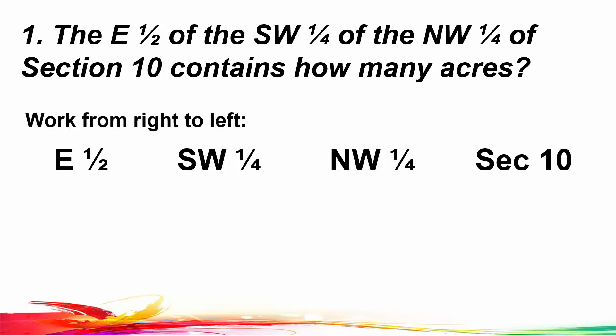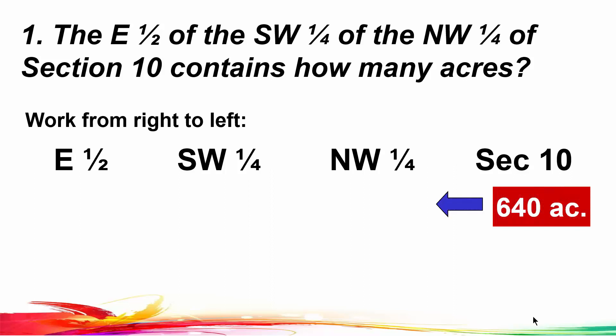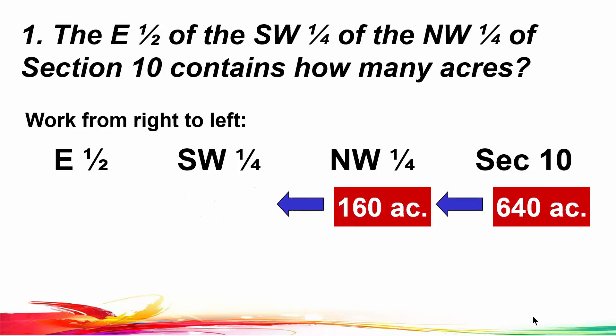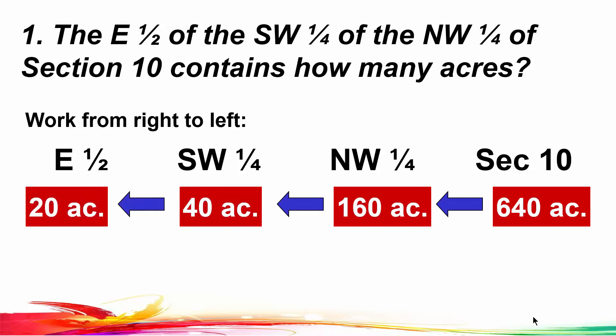Then work from right to left, listing the number of acres in each. Section 10 has 640 acres, and the northwest quarter of that contains 160 acres. Then one quarter of 160 acres is 40 acres, and one half of that 40 acres is 20 acres. Whenever you're given a description and want to find the number of acres, write the description down on scrap paper, starting on the right with the section at 640 acres, then quartering or halving as the problem tells you.